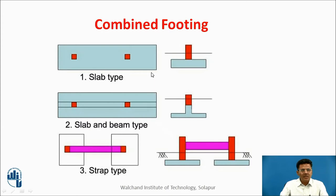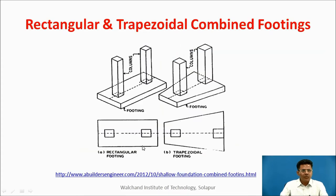Let us see the combined footings. This is a rectangular combined footing of slab type — this is a top view and this is a section. This is a slab-and-beam type combined footing, which is rectangular. There is also one special type, that is a strap type footing. In 3D we can observe a rectangular combined footing with columns, and one can also go for a trapezoidal footing as shown in the figure.